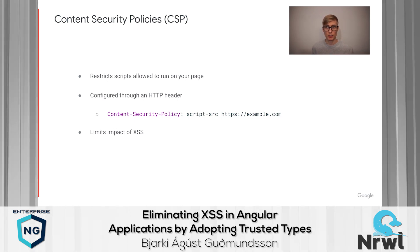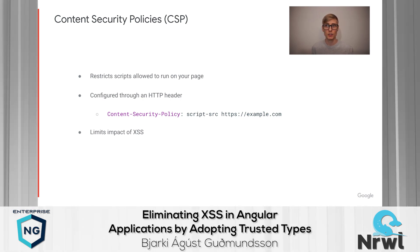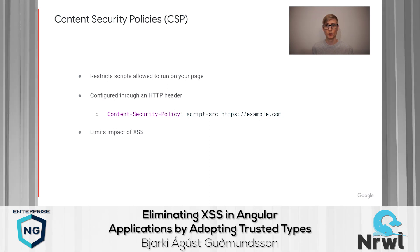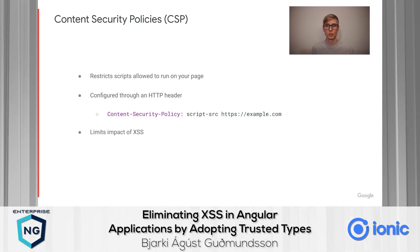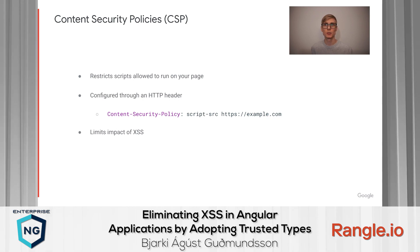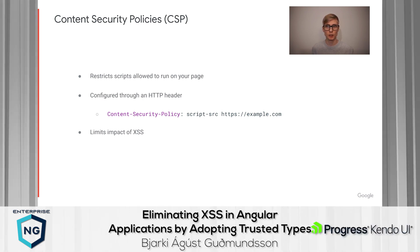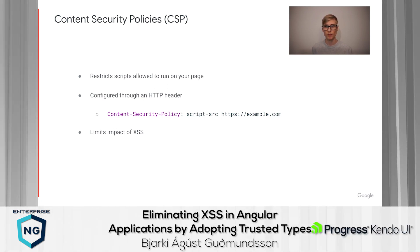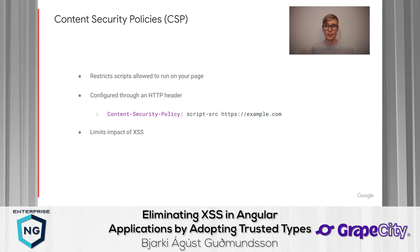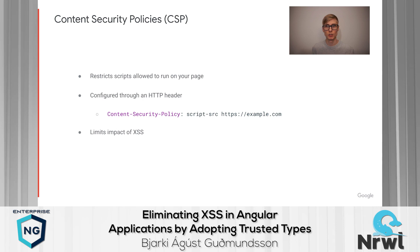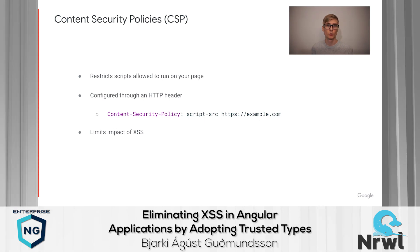Expanding a bit on content security policies, they allow you to restrict which scripts are allowed to run on your page. They are configured by having your web server send an HTTP header. For example, a CSP header with a value of script-src example.com will make the browser block execution of any scripts that are not loaded over HTTPS from example.com, ensuring that only scripts you trust are executed. While a good CSP policy may limit or even block impact from DOM-based XSS, it does not address the root cause, which is unsafe uses of injection sinks. Attackers may still be able to deface your website or use it for phishing attacks.